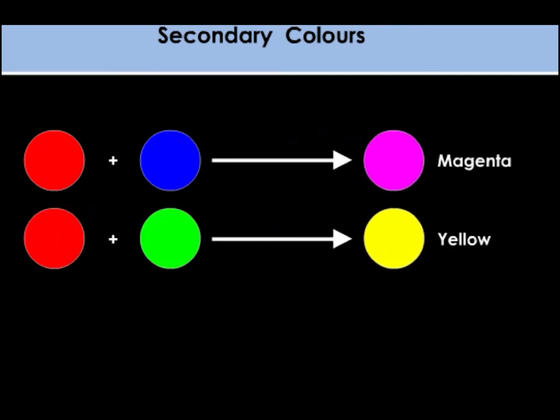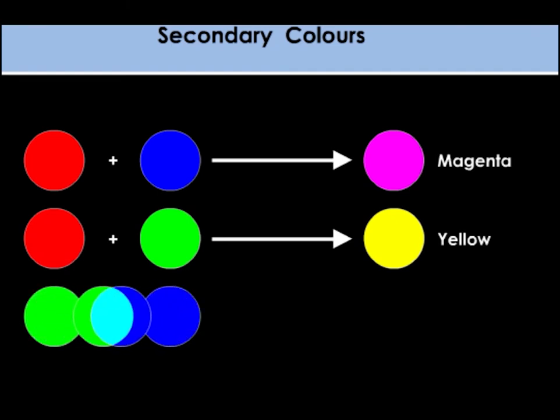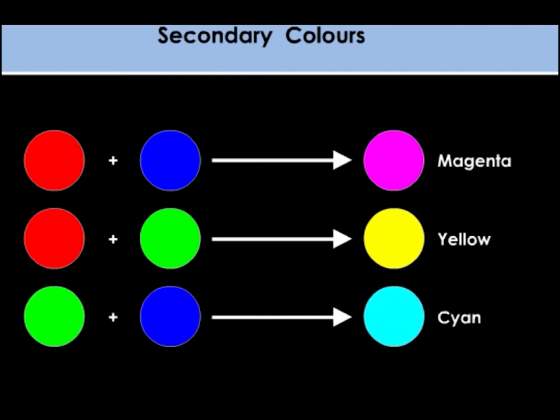Red and green light will form yellow. Green and blue light will produce cyan.